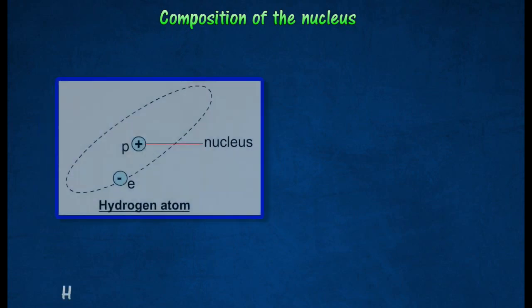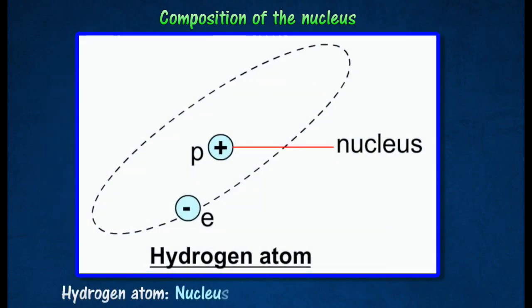All atoms except the hydrogen atom contain neutrons in their nuclei. The simplest and lightest atom on Earth is the hydrogen atom. Its nucleus has a single proton with an electron orbiting it.